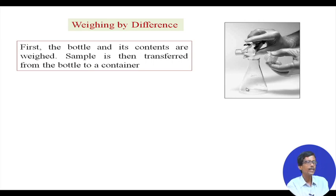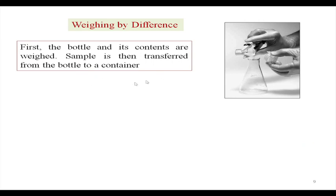We are not using any other container or beaker or watch glass to transfer this sample from the weighing bottle to the conical flask — this is a typical direct transfer of sample from the sample container or the weighing bottle to the conical flask where we make the solution. Next class we will continue: first you can have the weight of the empty container, then weight of container plus sample, and if we consider the second weight as your first weight, we can transfer some amount of sample to make a standard solution.